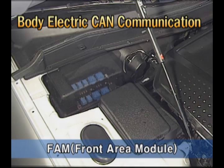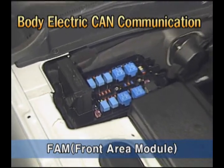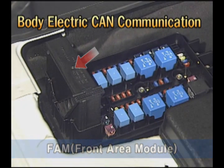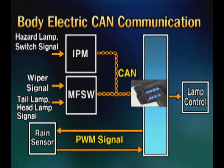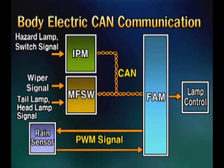The front area module (FAM), installed at the right upside of the engine room, performs pulse width modulation communication with the rain sensor. Receiving various switch signals as CAN signals, it controls the exterior lamps.